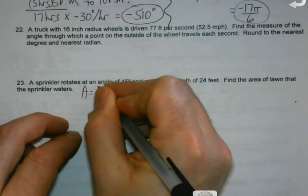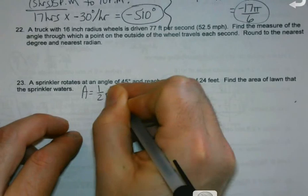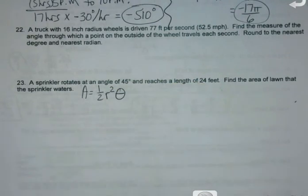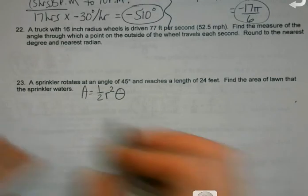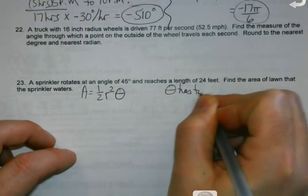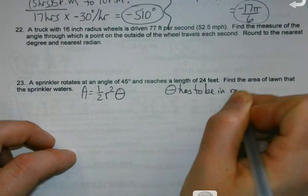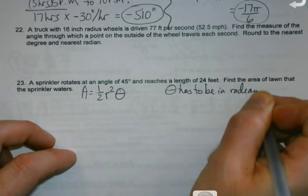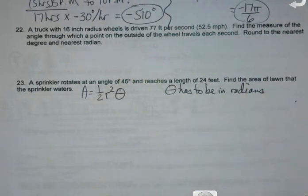From yesterday, we had a formula for this: one half radius squared times theta. A couple of things I have to remember. Theta has to be in radians. Whenever we're using these formulas, you have to get that radian measure.